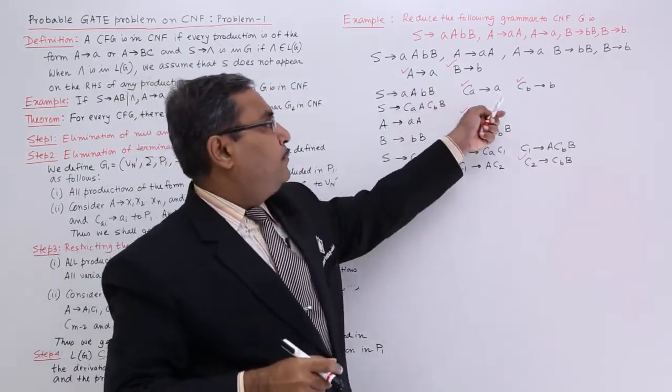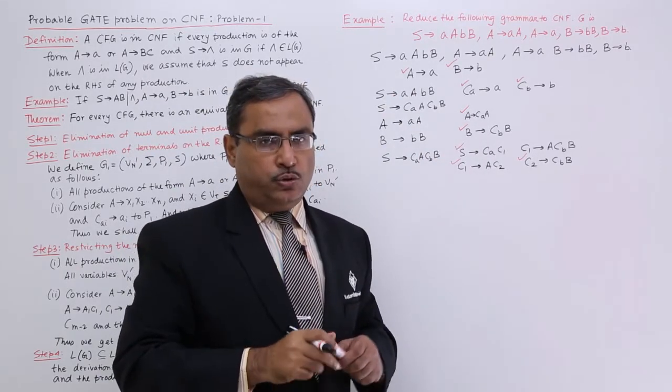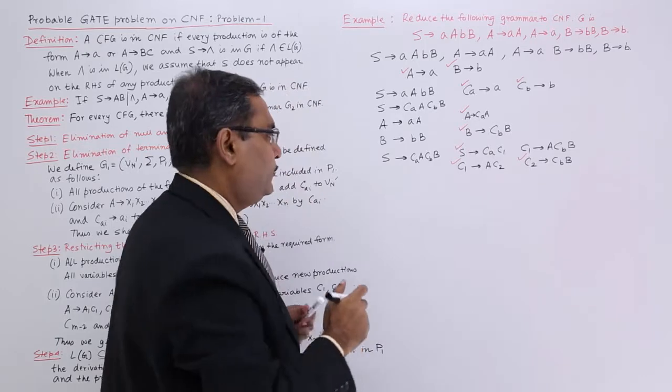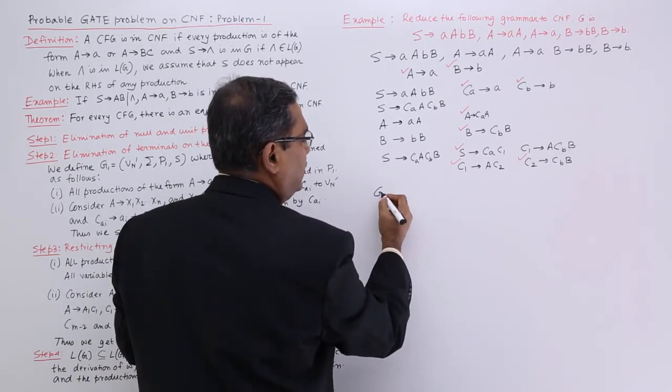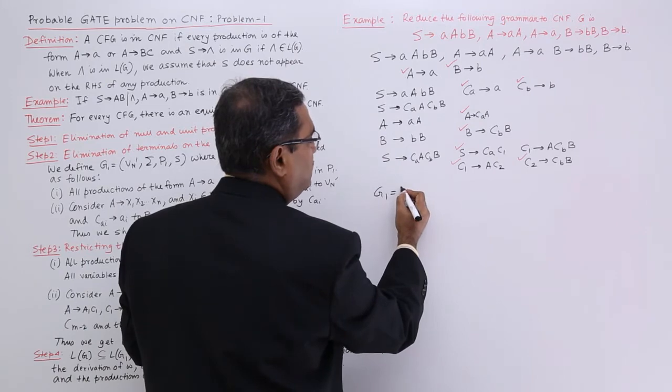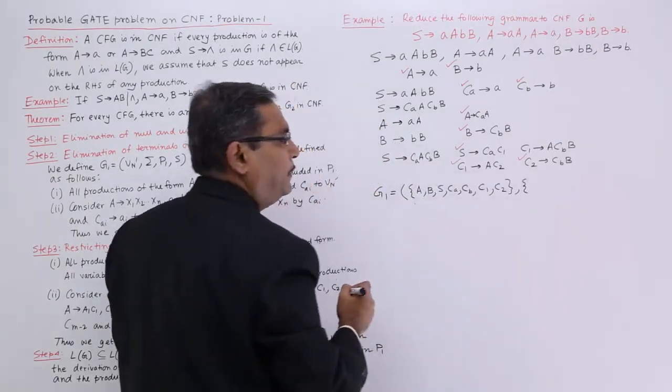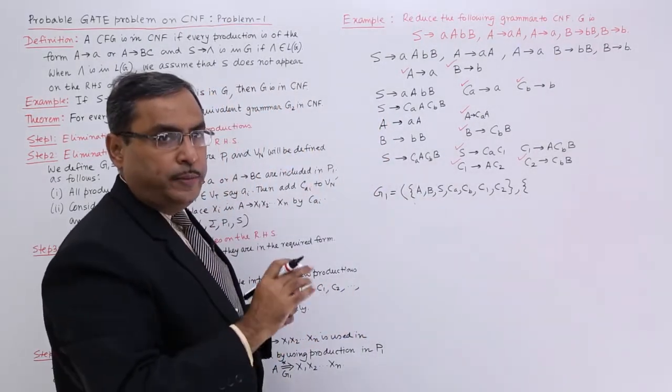Now let me define the grammar. Let the grammar be G1, and here we are having Vn, Vt, P, S. I am remaining with Vn. Let me consider the production rules which will be included there.